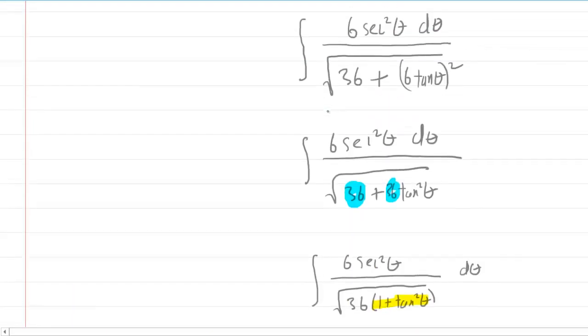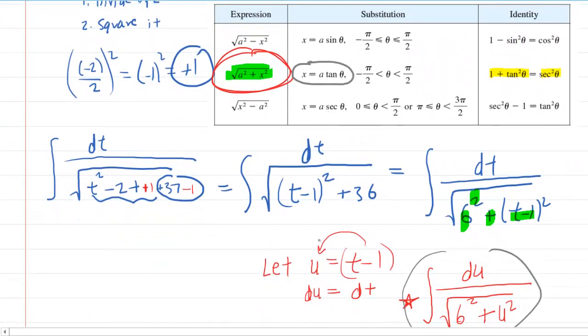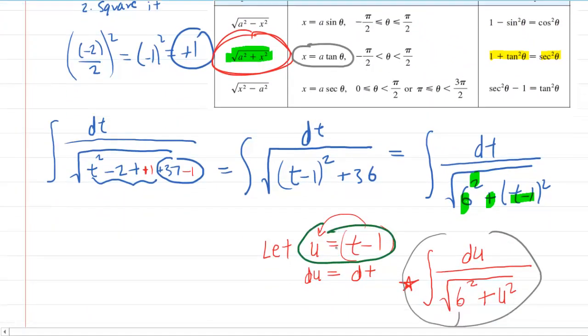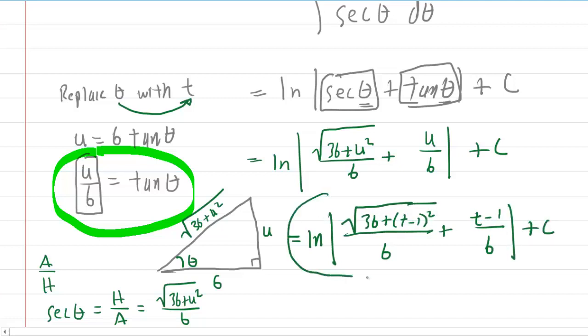We go all the way back up to our original substitution, and it's right there. u was equal to t minus 1. So wherever you see a u in your answer right now, you're going to substitute it with a t minus 1. So you'll have 36 plus t minus 1 squared over 6 plus t minus 1 over 6. And that would be the correct answer to the integral.